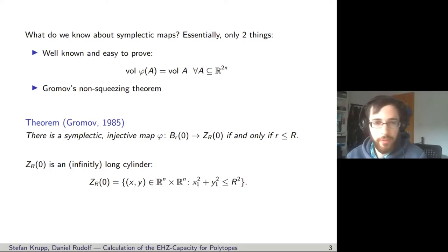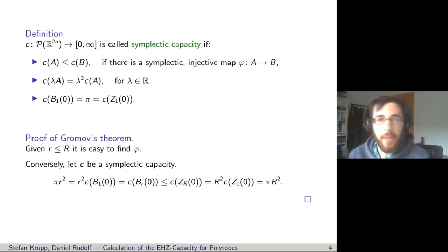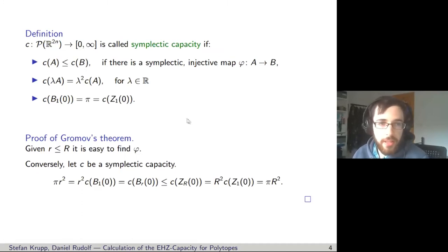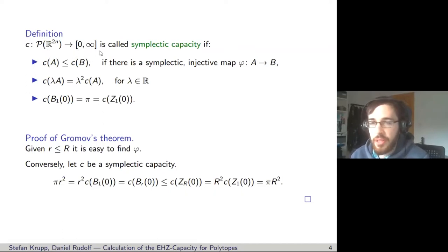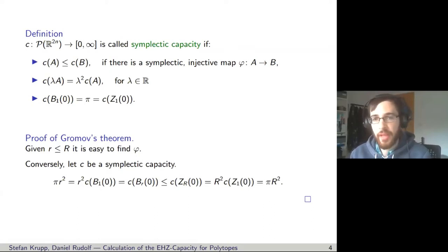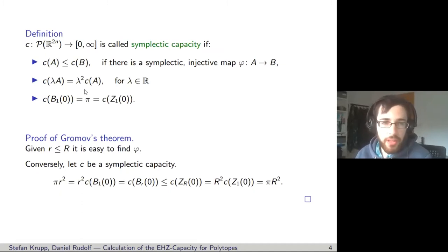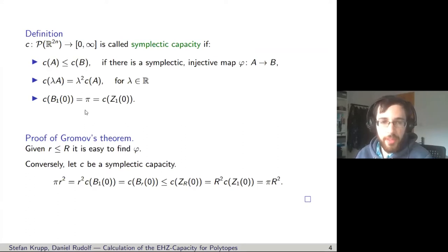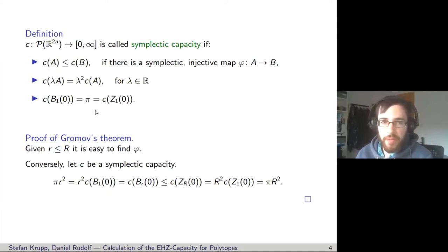This theorem has an elegant proof, but first we need the definition of a symplectic capacity — the central object of my talk. A symplectic capacity maps each subset of R to the power 2n to a non-negative number or infinity, satisfying three properties: monotonicity — if set A maps to set B via a symplectic injective map then the capacity of A is at most the capacity of B; 2-homogeneity — scalars come out squared; and non-triviality — both the unit Euclidean ball and the infinitely long cylinder with radius 1 have symplectic capacity pi.